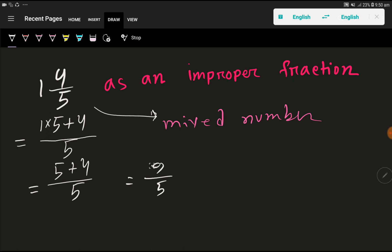The numerator is 9 and the denominator is 5. Since the numerator is greater than the denominator, this is an improper fraction. So 9/5 is the answer.